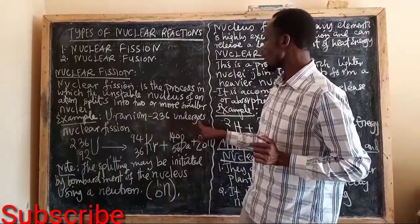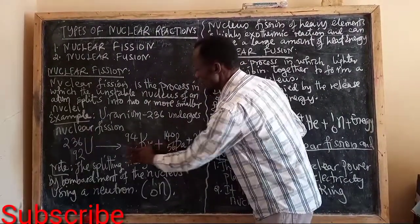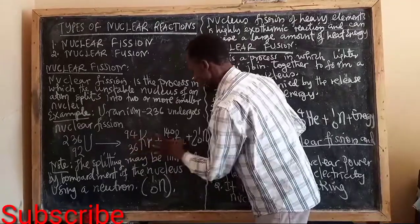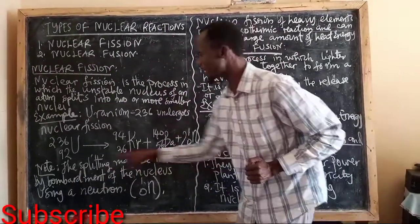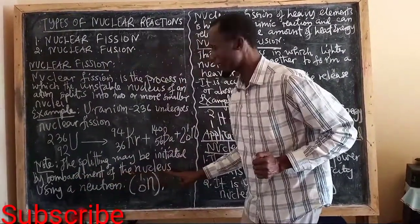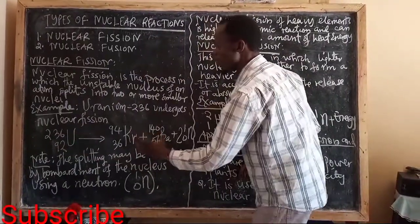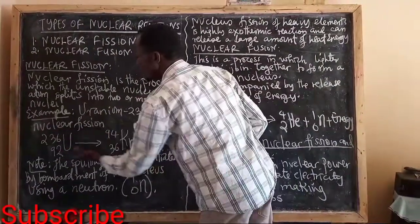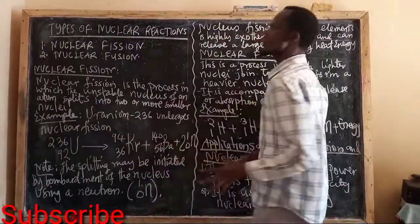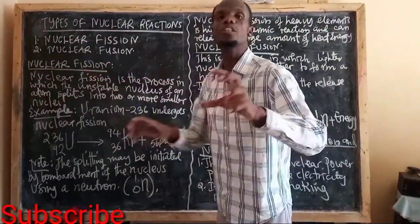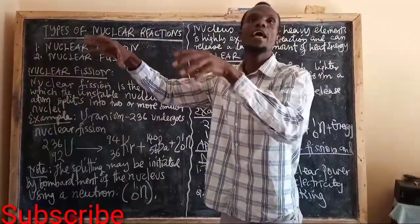As an example, Uranium undergoes nuclear fission in such a way that it is broken down to form two smaller nuclei, in the presence of neutrons. The splitting may be initiated by bombardment of the nucleus using neutrons. So the bombardment of neutrons into the Uranium forms two different smaller nuclei, which is what we call nuclear fission — breaking down the heavy one to form lighter ones.